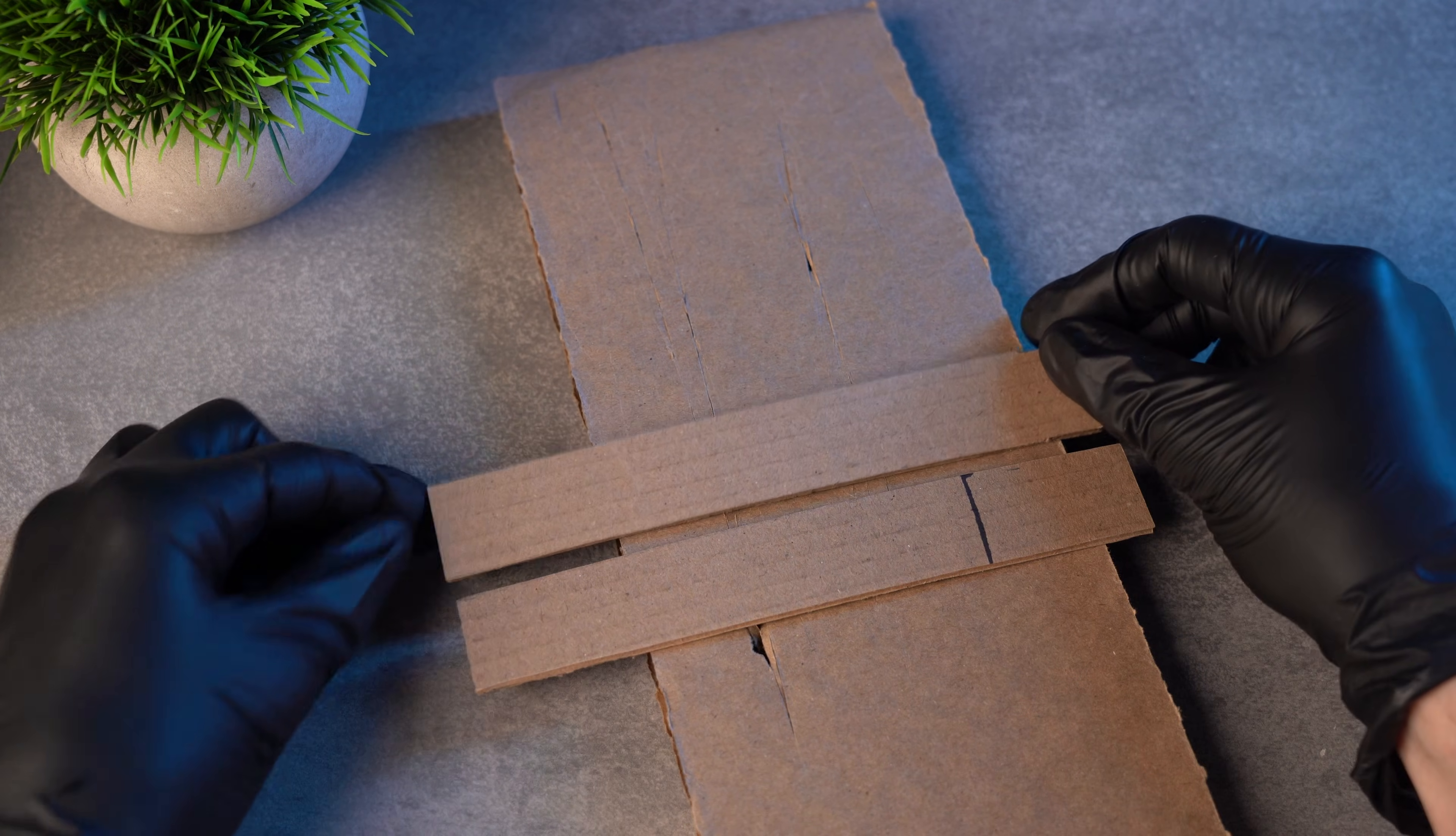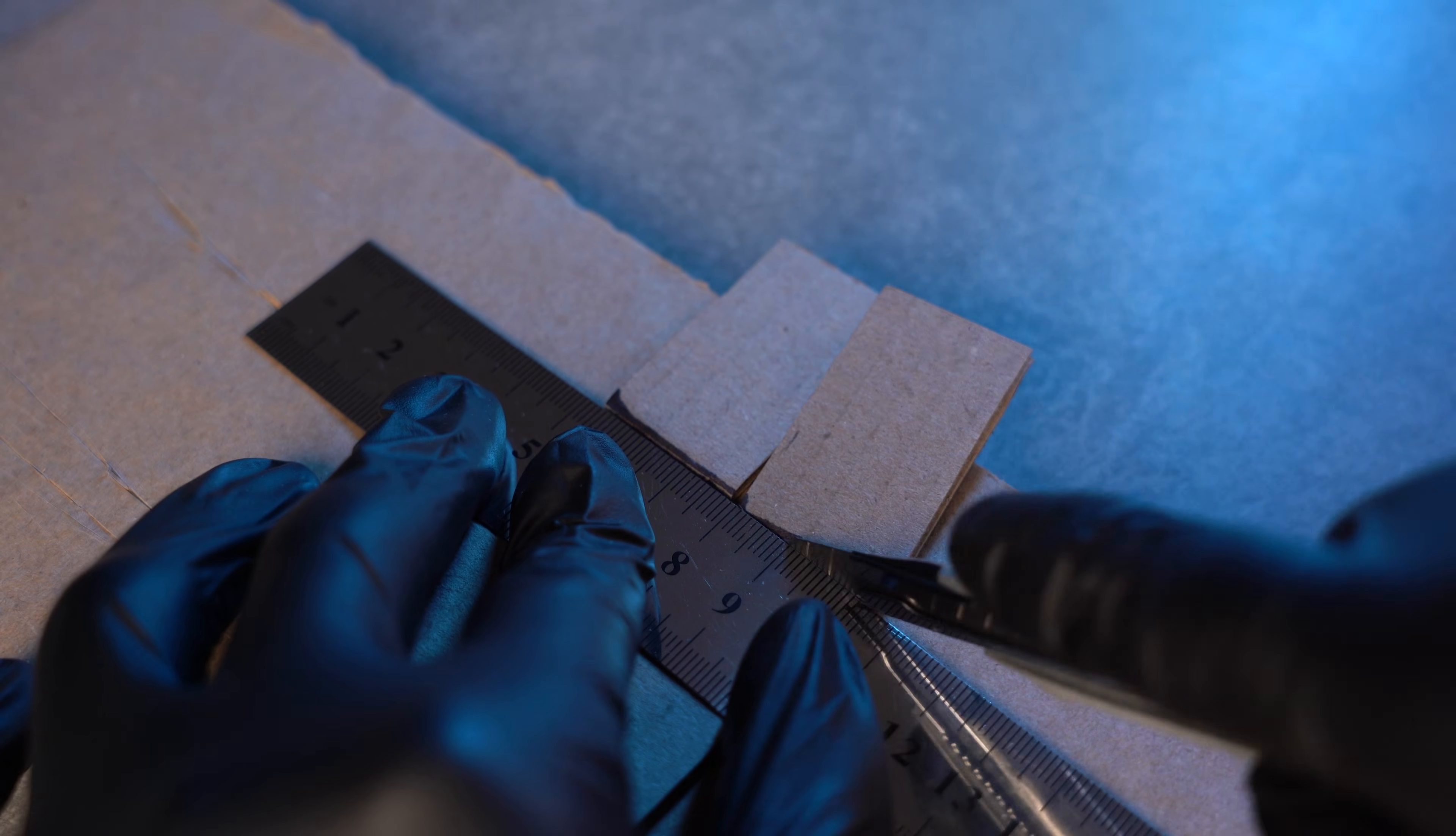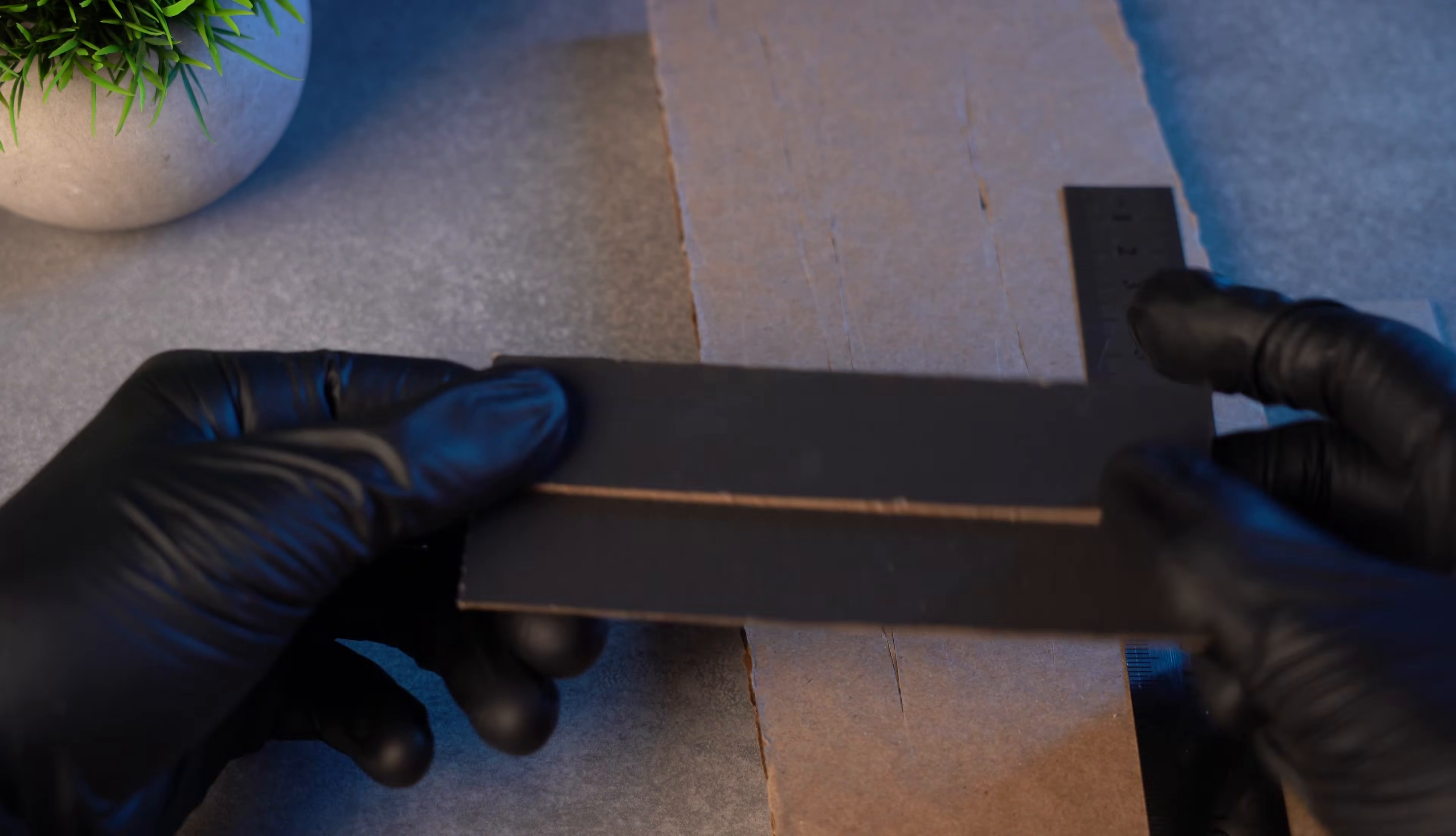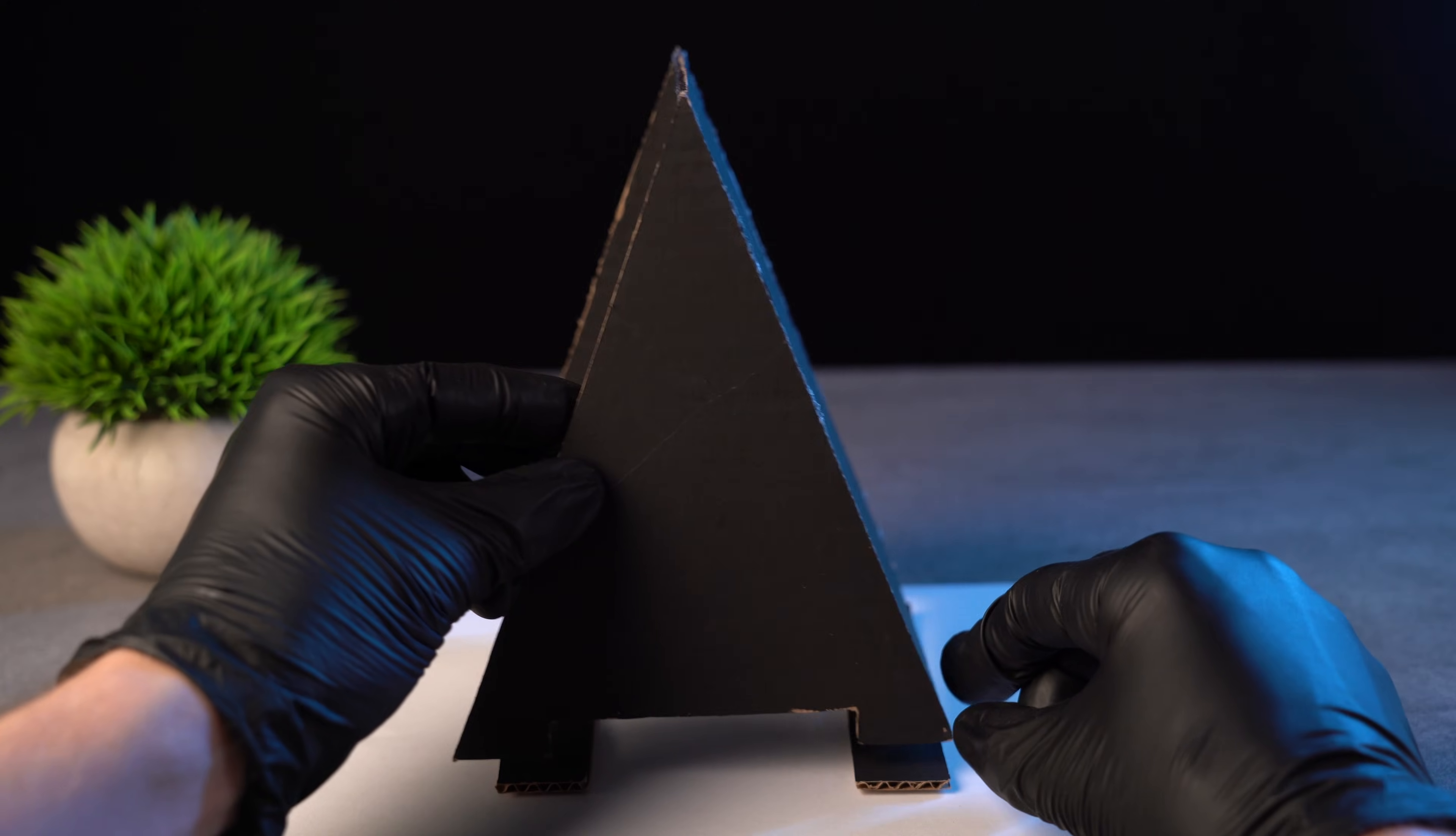The second strip will be the same length, so I just place it next to the first one and cut it with the utility knife. We'll glue the strips on with the painted side facing up.